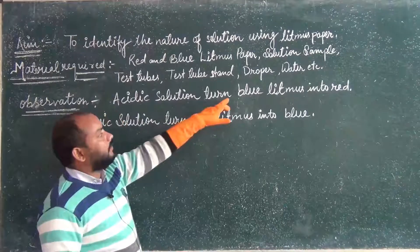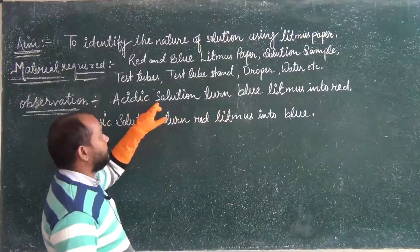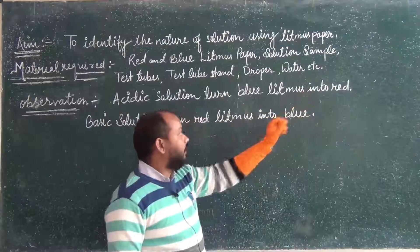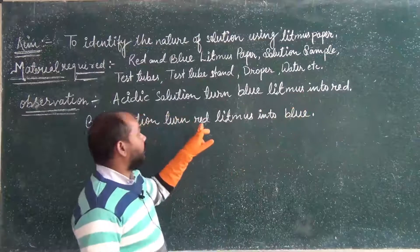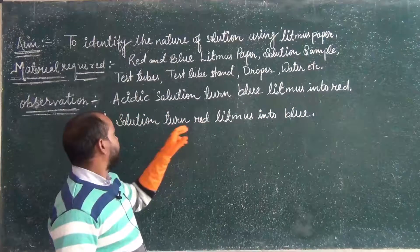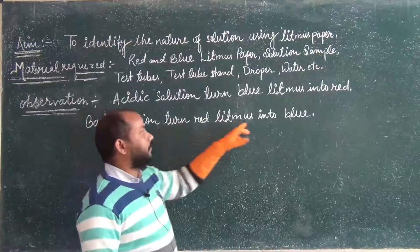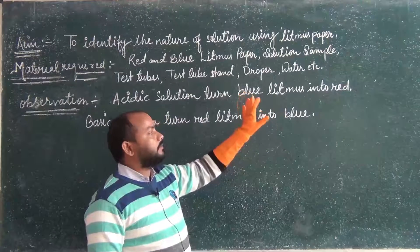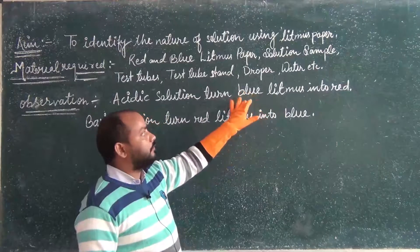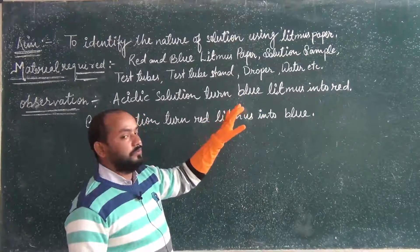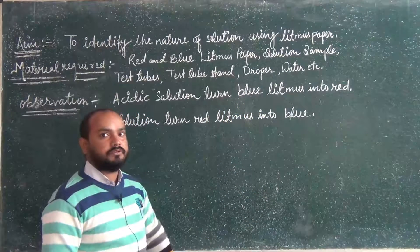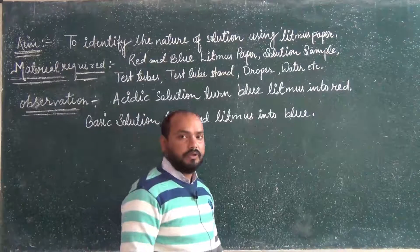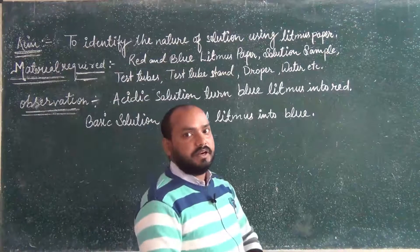When blue litmus paper reacts with an acidic solution, it turns red. And when red litmus paper is placed in a basic solution, it turns blue. By observing the color change of the litmus paper — from blue to red or red to blue — we can identify the nature of the solution, either acidic or basic. So, let us start the activity.